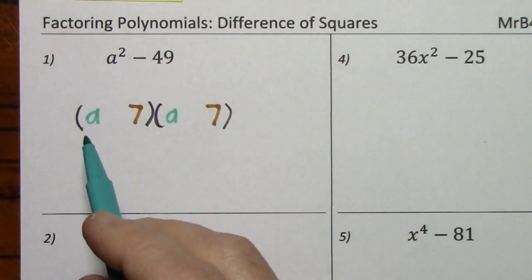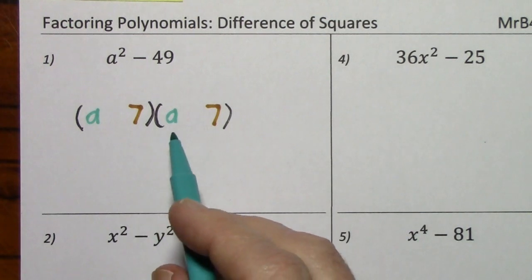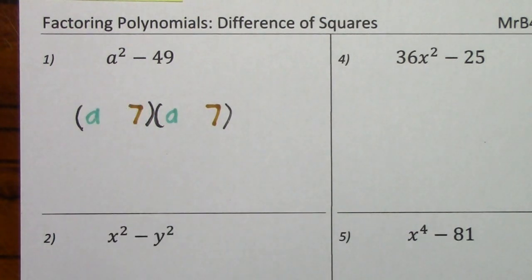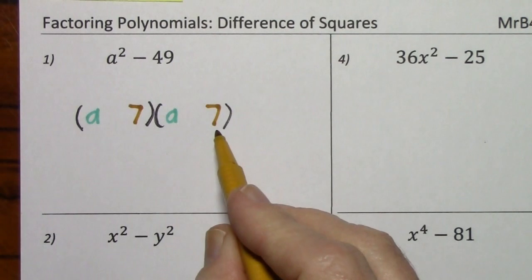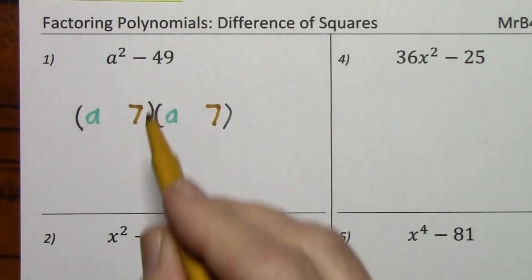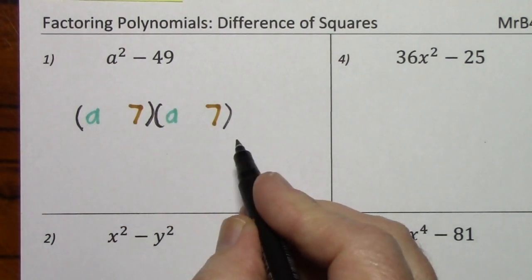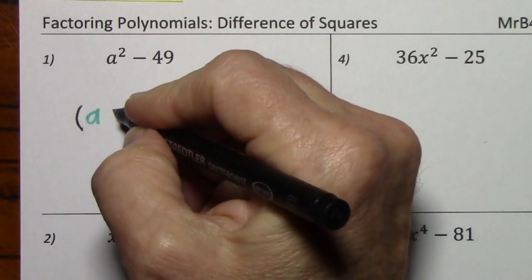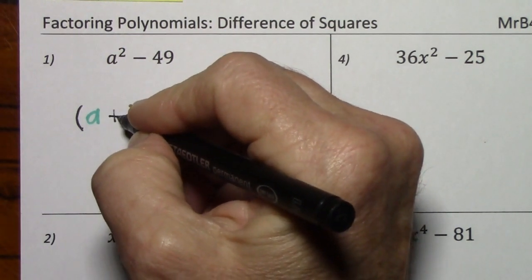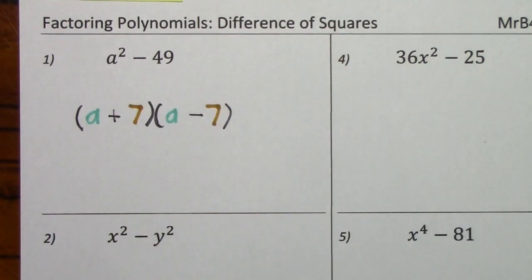The square root of 49 is 7, so you put 7 here and here. If you multiplied a times a, you would certainly get a squared. If you multiplied 7 times 7, you'd certainly get 49. For the correct factored form, you simply make one of these a plus and one a minus.